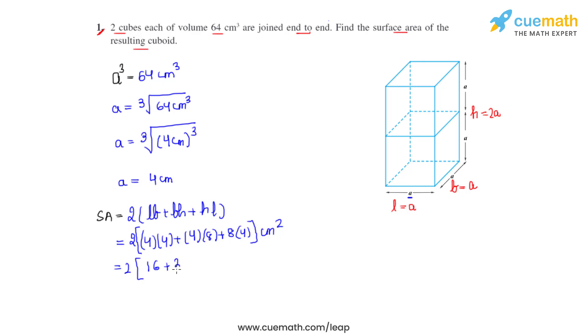4 times 8 is 32, 8 times 4 is 32. So we have 16 + 32 + 32 = 80 cm². Now that gives us 2 times 80 cm².